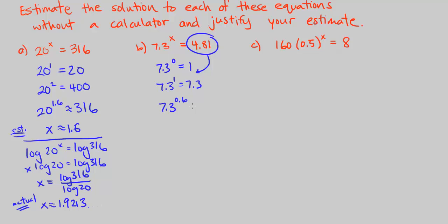It's between 0 and 1, approximately 4.81. So we have x estimated to be 0.6. Let's get the actual value. I want to compute that to see how close we are.